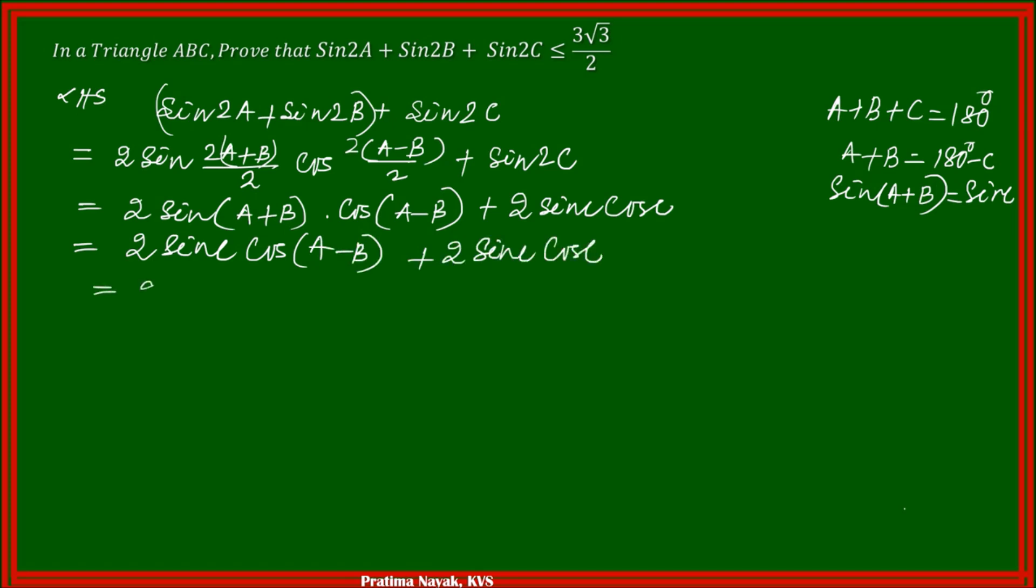So this can be written as 2 sin C cos of A minus B plus 2 sin C cos C. Taking 2 sin C outside, it will be cos of A minus B plus cos C. I can write cos C as cos of A plus B using the same logic.